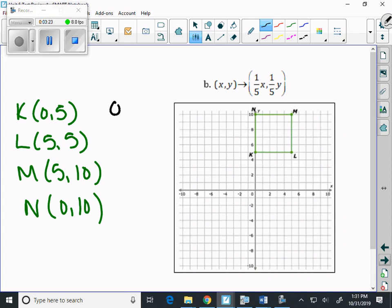0 times 1 fifth is 0. 5 times 1 fifth is 1. And 5 times 1 fifth is 1. 5 times 1 fifth is 1. And 10 times 1 fifth is 2. 0 times 1 fifth is 0. And 1 fifth times 10 is 2.